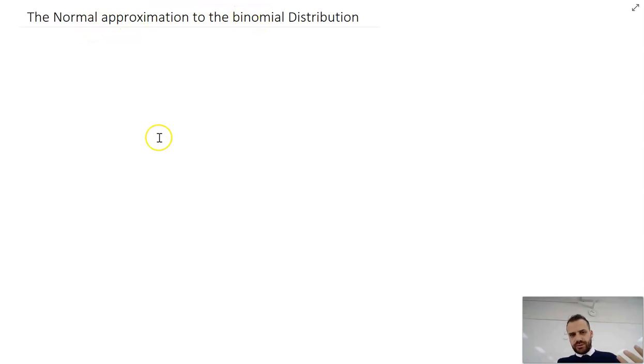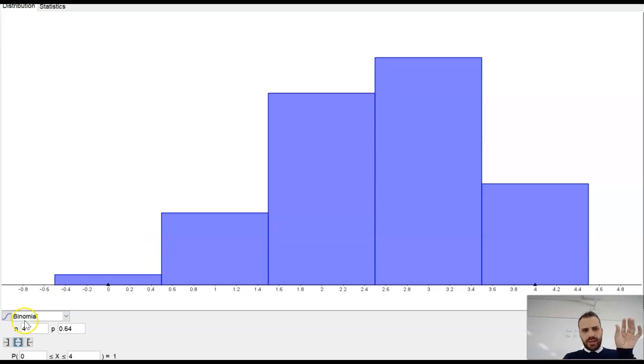So you should remember the binomial distribution, Bernoulli trials, success, failure. We're going to look at one of those graphs and you should notice something about it now that you look at it a second time. So we're starting off small here, we've got four trials, probability of success is 0.64 and we get this nice little histogram going on.